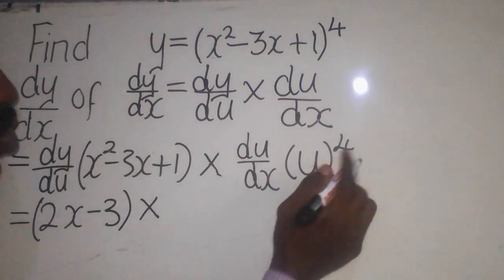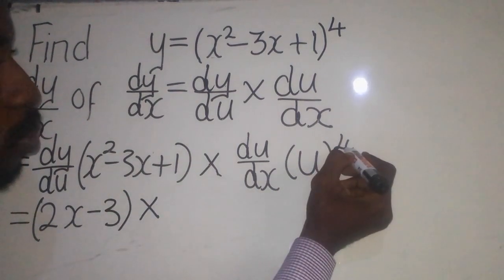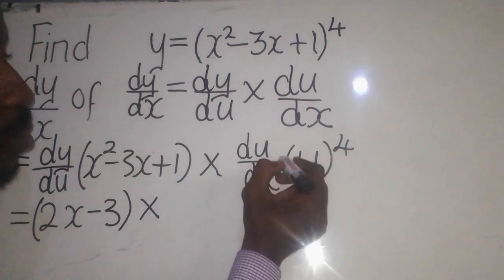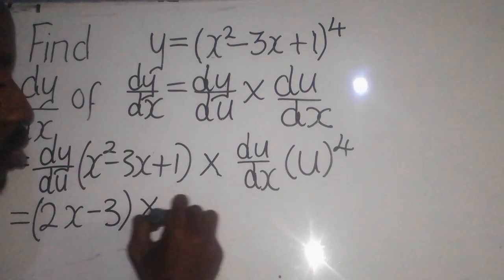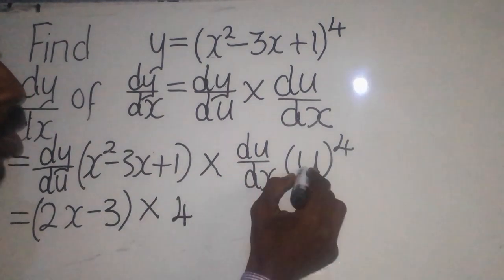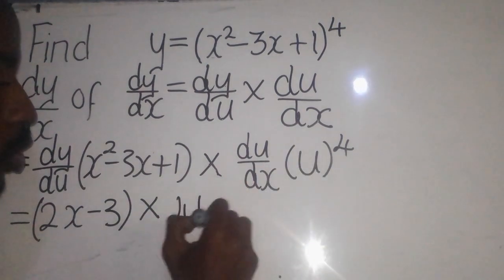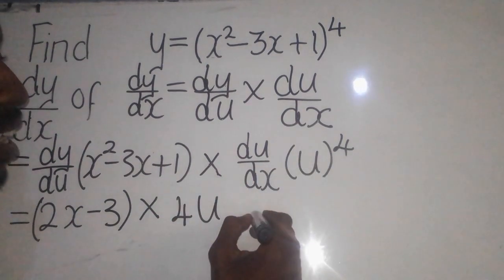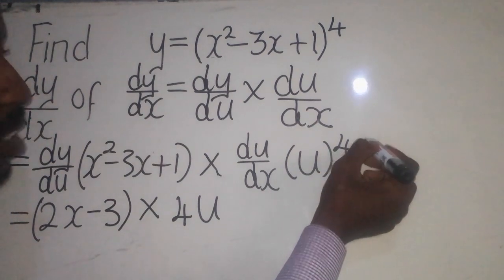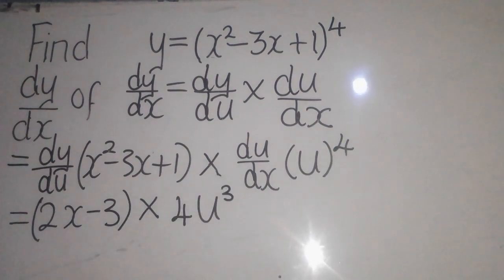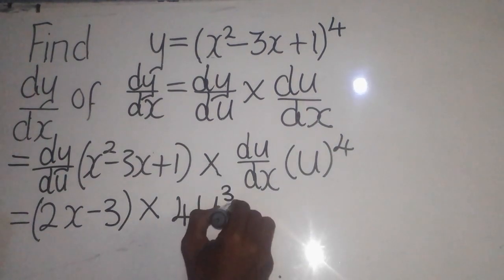Now go to the outer part. It will be 4 times the invisible coefficient 1, which gives 4. You put u there, and 4 minus 1 is 3, so you get u to the power 3.